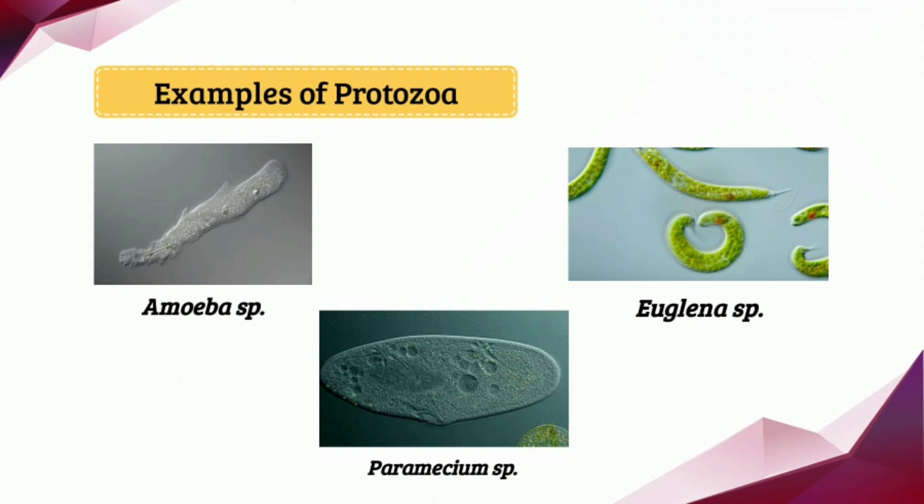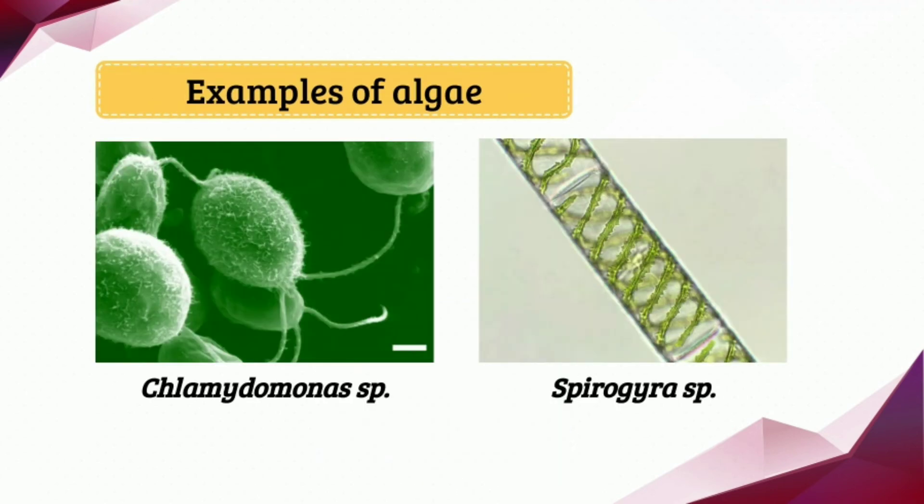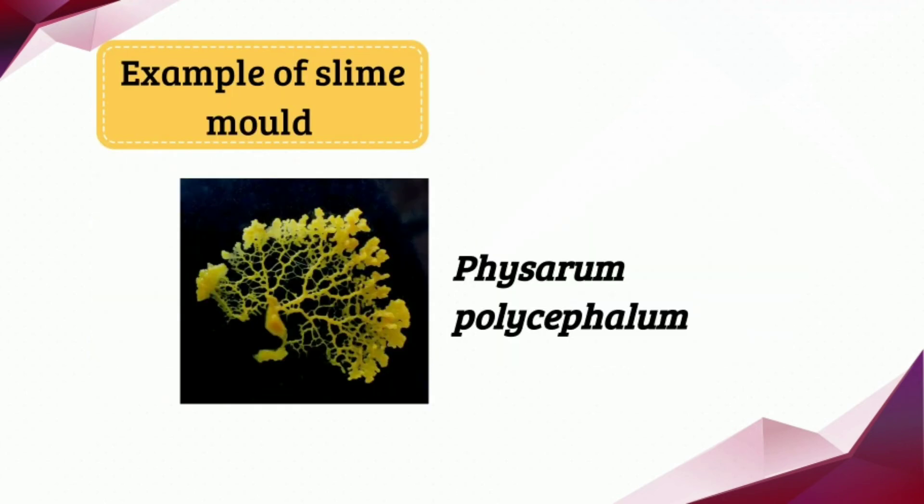The examples of Protozoa are Amoeba, Paramecium, and Euglena. As for algae, we have Chlamydomonas and Spirogyra. Lastly, the example of slime mold is Physarum polycephalum.